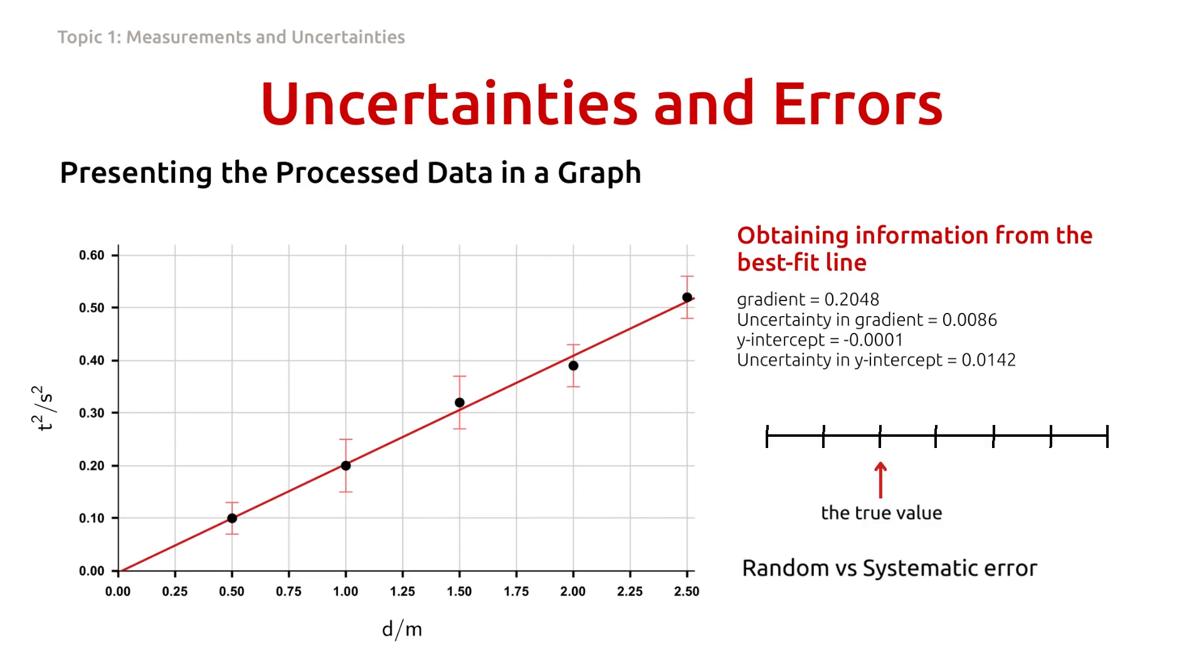Let us now look at each individual point. Suppose that the true value of a quantity in a number line is pointed by this arrow. And these are the results of our measurements. Some are higher than the true value, while others are lower. This kind of error is referred to as a random error, and it is caused by fluctuations in the instrument reading, or how we interpret the reading. Random error affects the result of the measurements in a random manner. We can reduce this error by attempting to take more measurements.